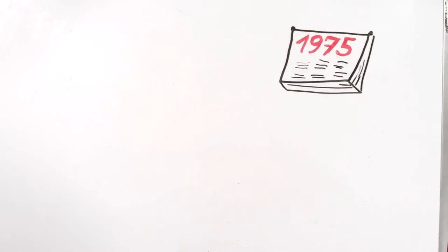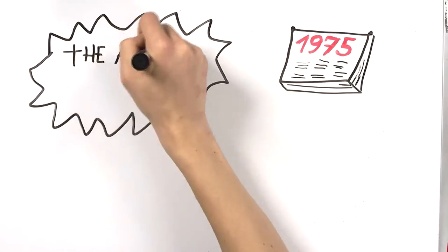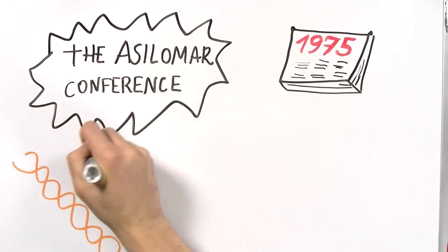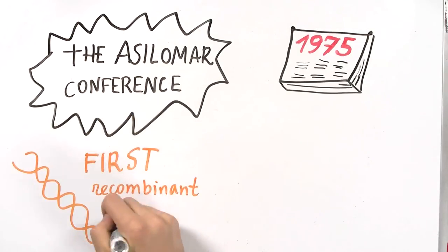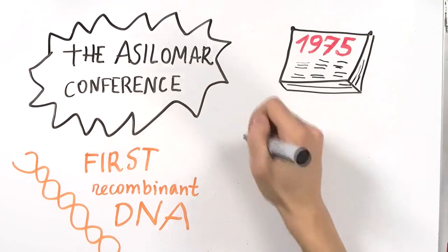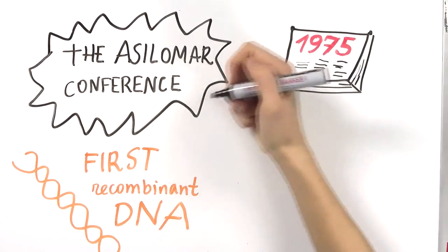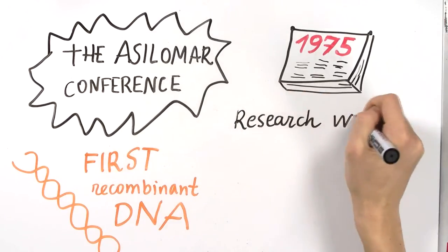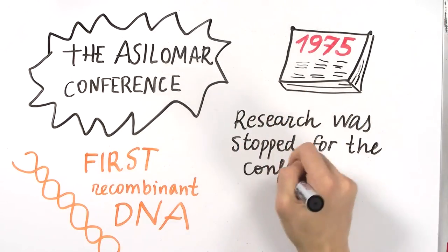Public discussions of science policy and its risks started in 1975 during the Asilomar conference. It was held in response to the creation of recombinant DNA for the first time. The scientists voluntarily stopped the research to organize the conference.